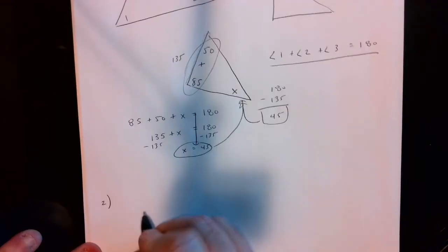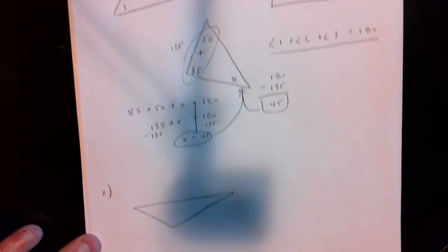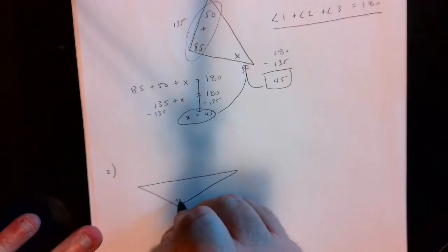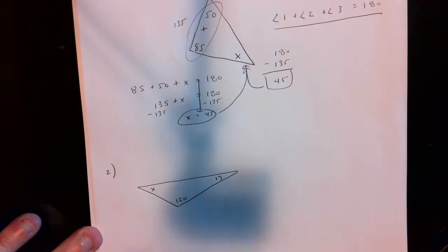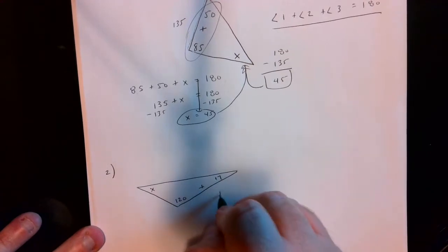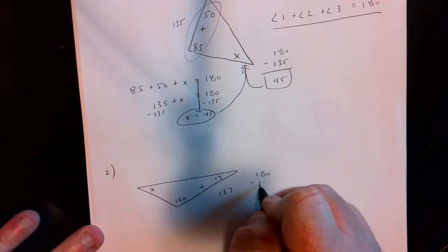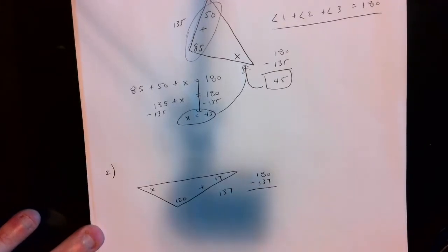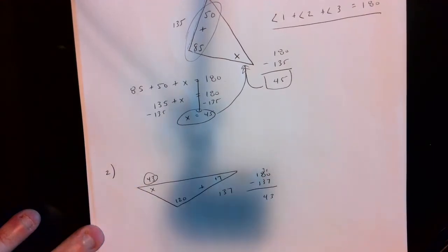If we have another triangle where this angle is 120 and this angle over here is 17, and we want to find the missing one, we add the two known angles: 120 plus 17 is 137. Since all three angles have to equal 180, we do 180 take away 137, which makes this angle 43 degrees.